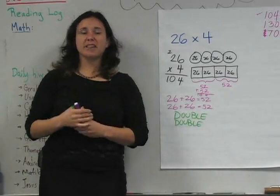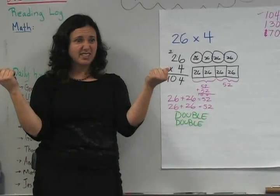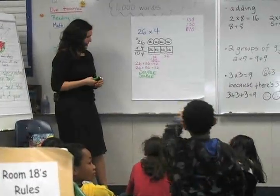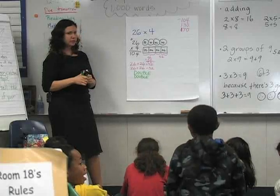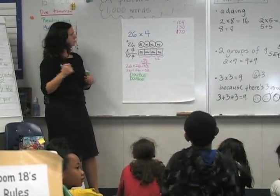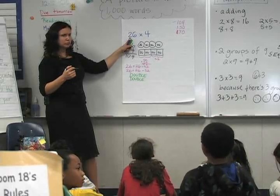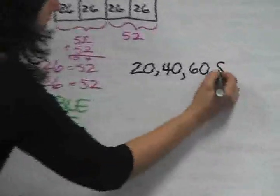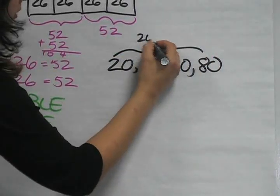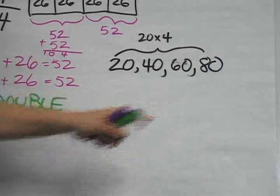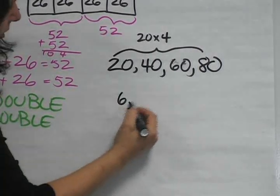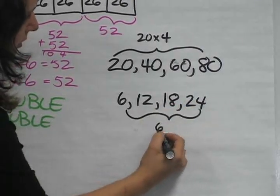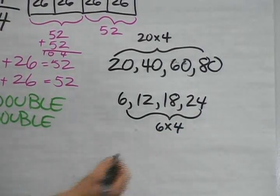Did anyone break the number 26 apart and do that? Or do you have a different way? Derek, what was your way? I have a different way. When I saw the number up there, I just looked at it. I know the 20 was in the tens place, so I did 20, 40, 60, 80 — four times. And then after that I did the six four times. So how did you do the six four times? I counted by sixes all the way to four: six, twelve, eighteen, twenty-four. And then I added those two — eighty and twenty-four together — and made a hundred and four.